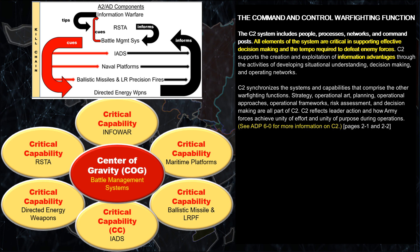The C2 system includes people, processes, networks, and command posts. All elements of the system are critical in supporting effective decision-making and the tempo required to defeat enemy forces. Strategy, operational art, planning, operational approaches, operational frameworks, risk management, and decision-making are all part of C2.